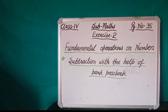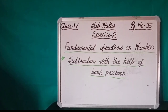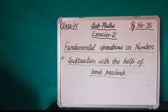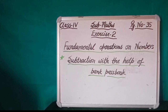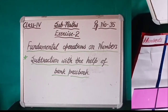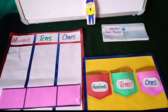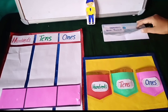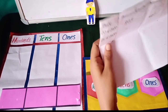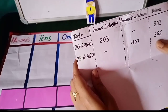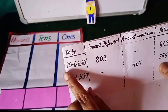Hello students. Today we will learn how to do subtraction with the help of a bank passbook. He is Harman and this is Harman's bank passbook. Let's see how many rupees Harman deposited in his bank account.